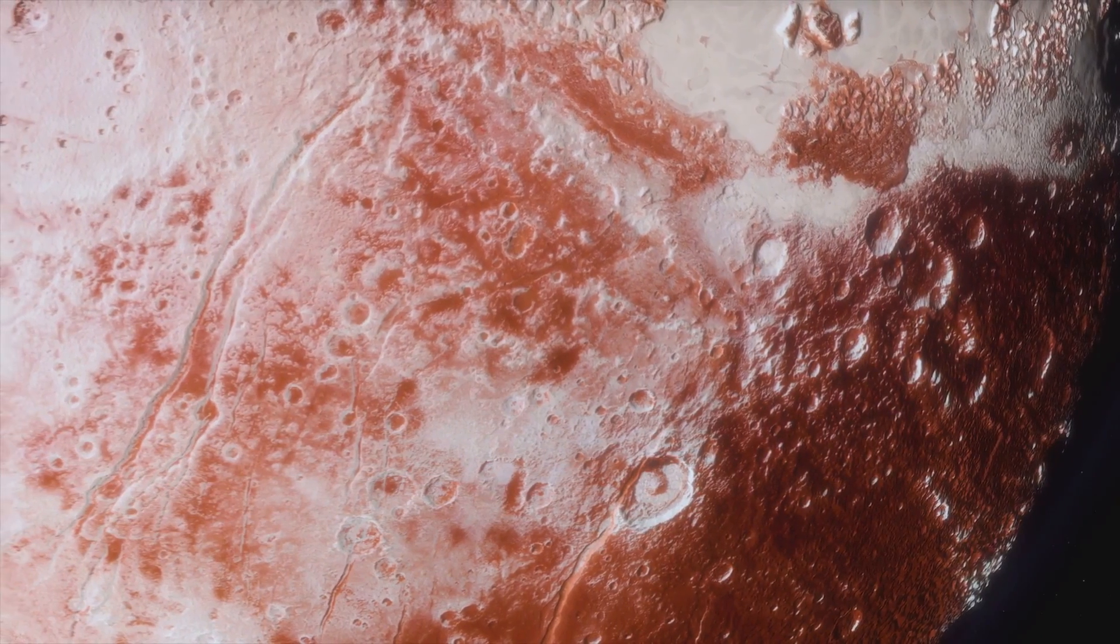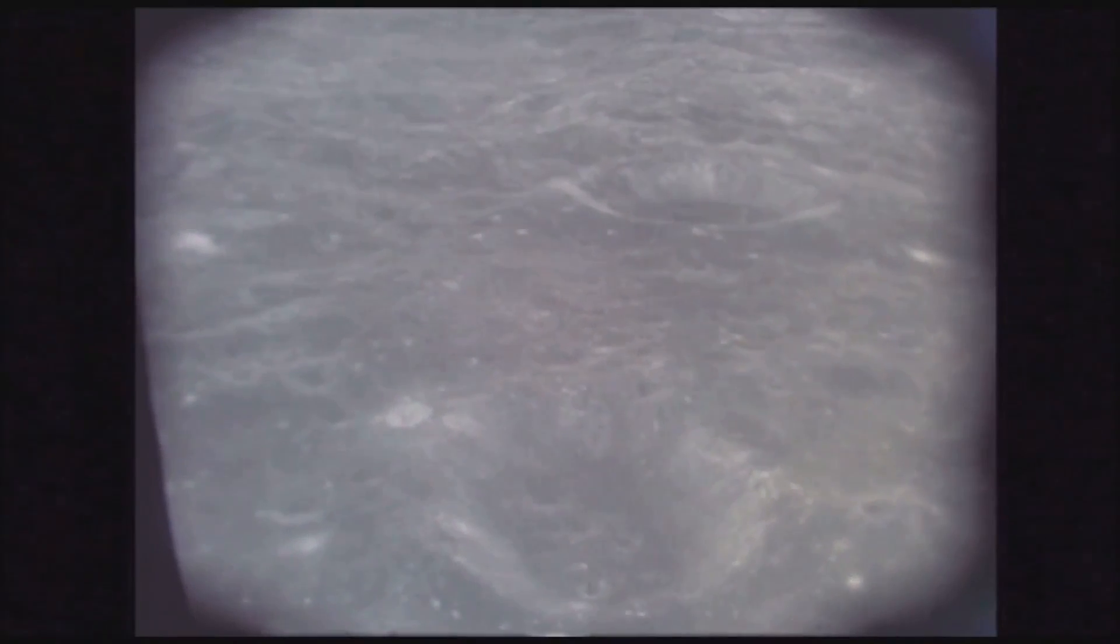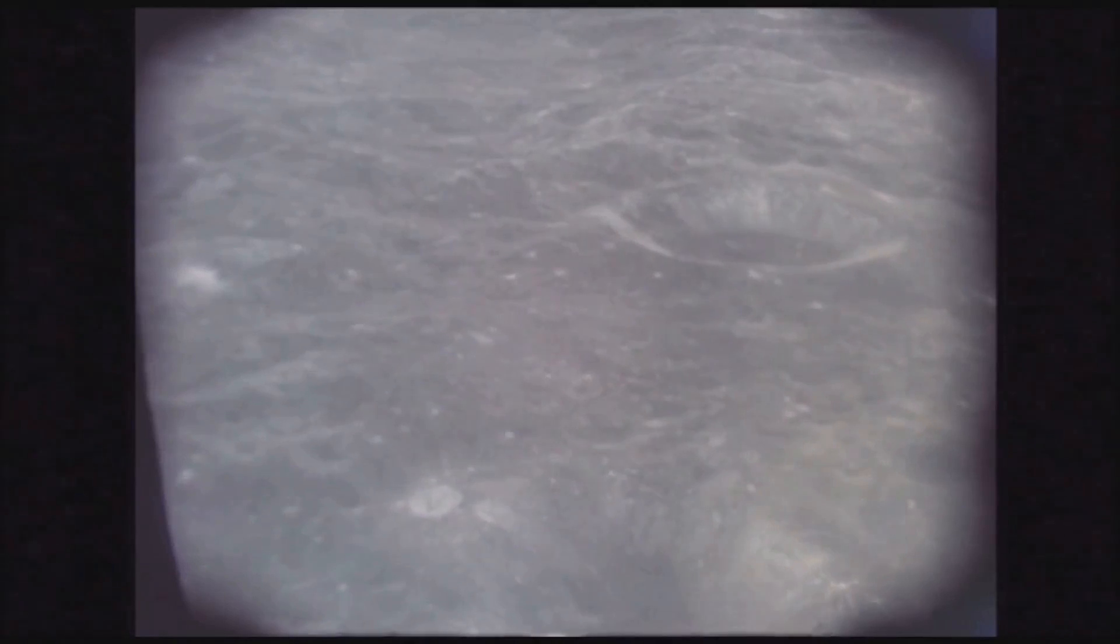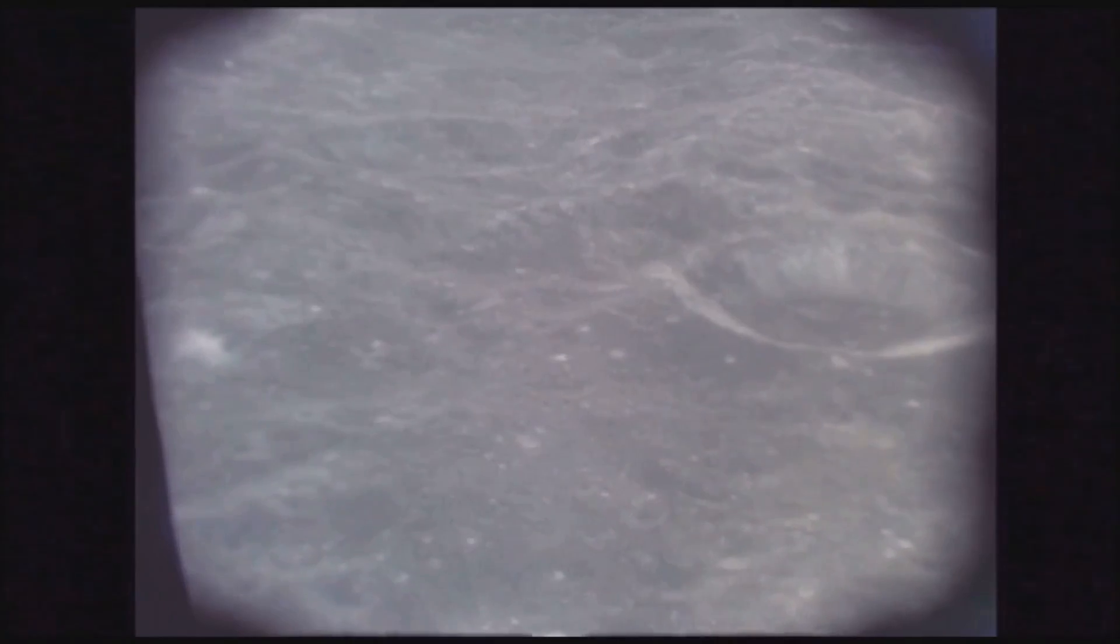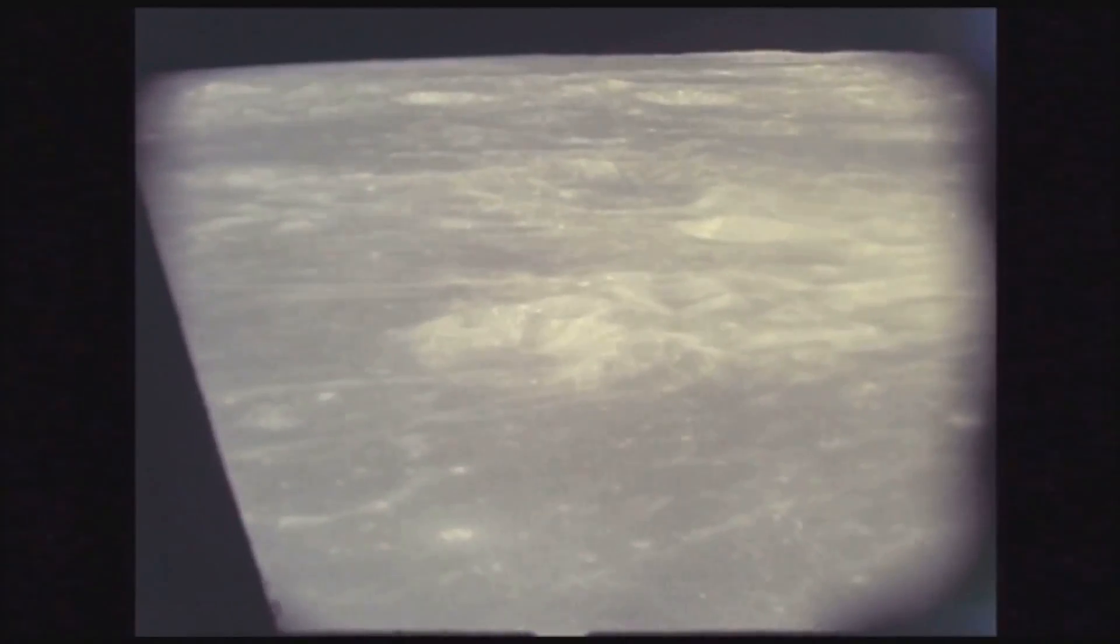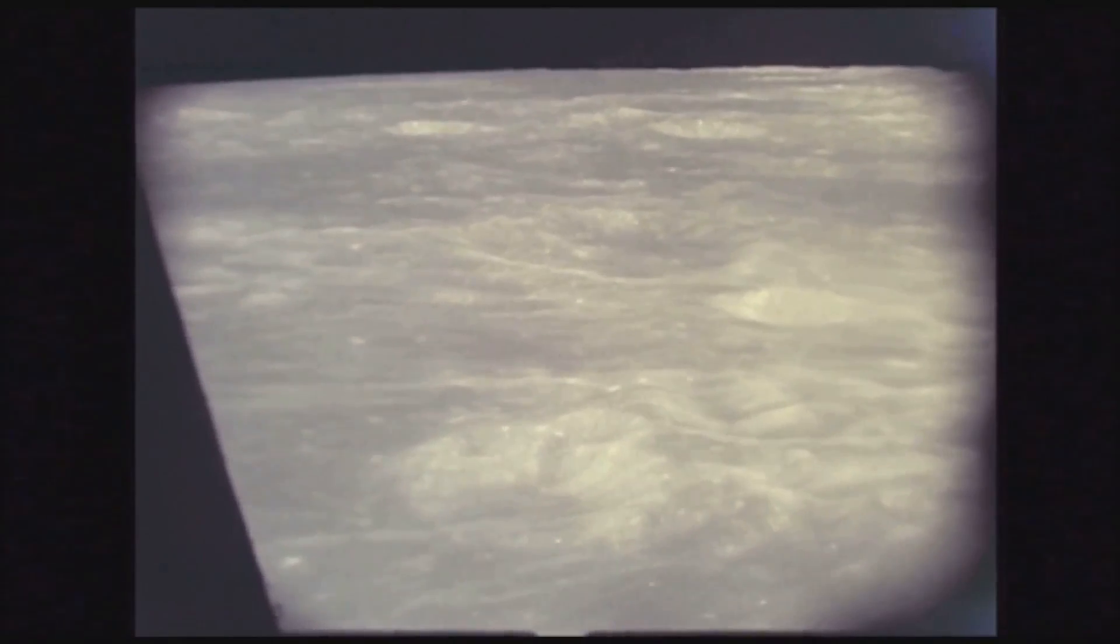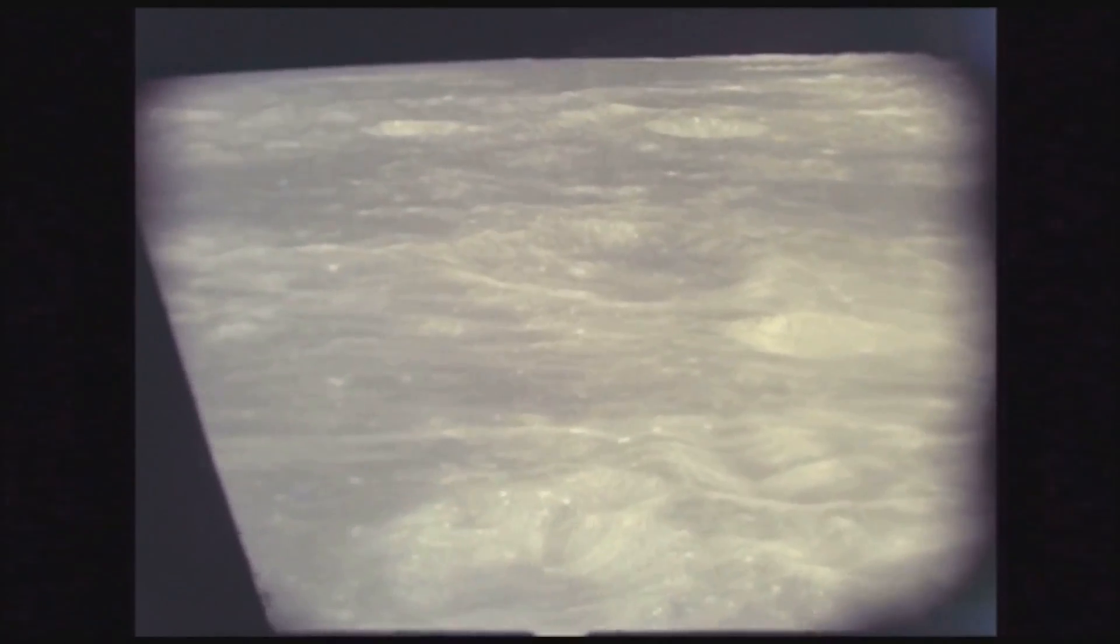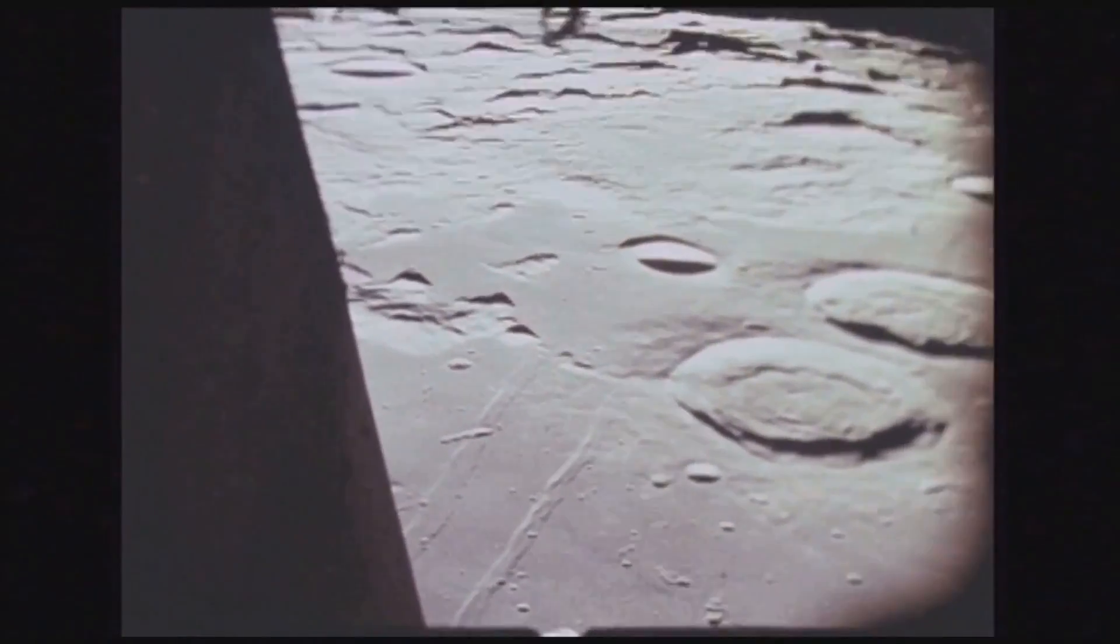But it's not just the quantity of craters that's impressive, it's also their quality. Because they've been preserved in such pristine condition, they provide an invaluable record of the solar system's past. Each crater, each impact mark, tells a story of a cosmic collision, a moment in time when a meteoroid smashed into the surface of Mercury. And by studying these craters, scientists can glean insights into the nature of the meteoroids that formed them.